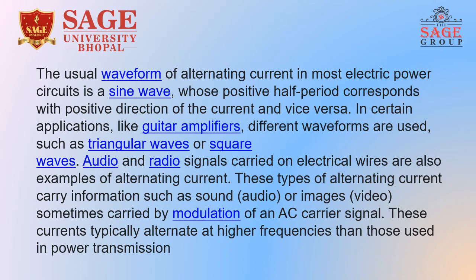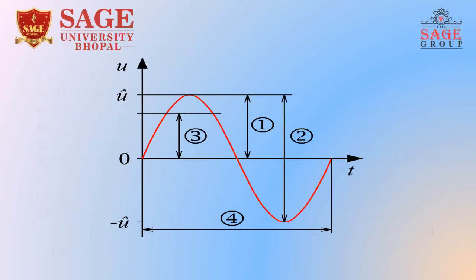This type of alternating current carries information such as sound, audio, or image video. It is carried by the modulation of an AC carrier signal. This current typically alternates at a higher frequency than those used in power transmission. Electronic devices produce waveforms like sine waveform, triangular waveform, and square waveform.